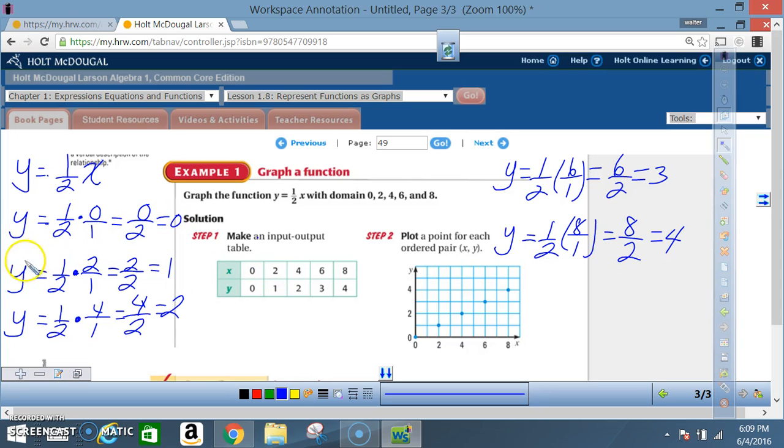My next value is 2. So now I have y is equal to 1 half times 2 over 1. Don't forget, there's a 1 up under there. So what's 1 times 2? 2. 2 times 1, 2. 2 divided by 2, 1. Next, 4. y is equal to 1 half times 4 over 1. 1 times 4 is equal to 4. 2 times 1 is 2. 4 divided by 2 is 2.